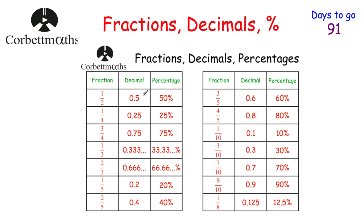A half is the same as 0.5, and that's the same as 50%, so they're all equivalent. A quarter is equal to 0.25, which is 25%. Three quarters is 0.75, which is 75%. A third is equal to 0.333 recurring, which is 33.333 and so on percent. Two thirds would be 0.6 recurring, or 66.66 and so on percent.